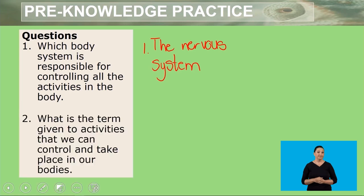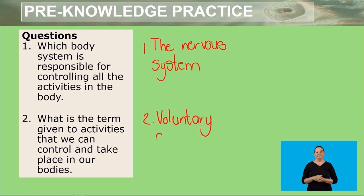And question two, what term is given to activities that we can control and that take place in our bodies? So, we basically have two types, those that we control and those that are mainly controlled by our nervous system. We know that those we control are called voluntary activities. And those that we cannot control are known as involuntary activities. For example, like breathing or the circulation of blood.